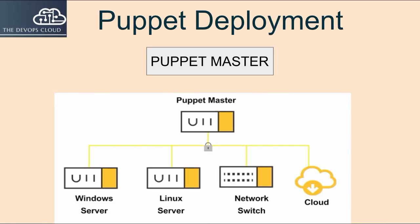The Puppet Master is the central hub of activity and process in Puppet Enterprise. This is where code is compiled to create agent catalogs, and where SSL certificates are verified and signed. PE infrastructure components are installed on a single node, the Master.